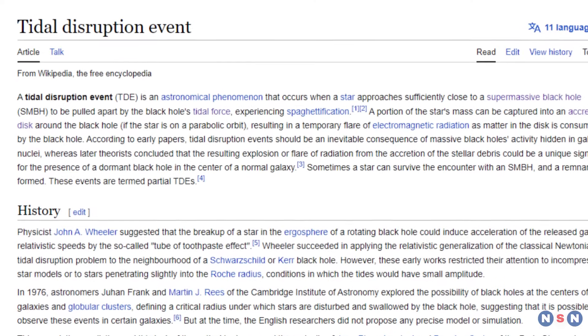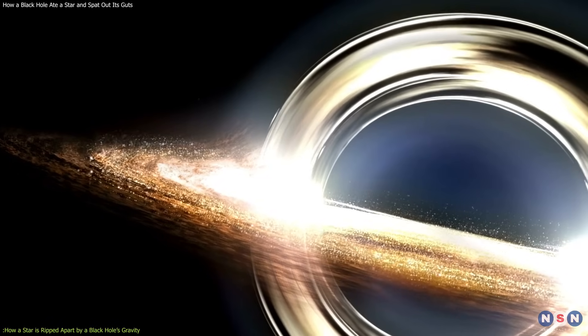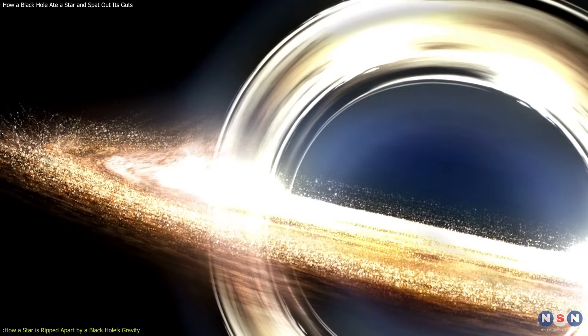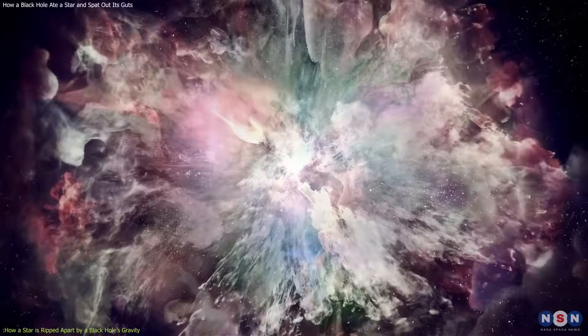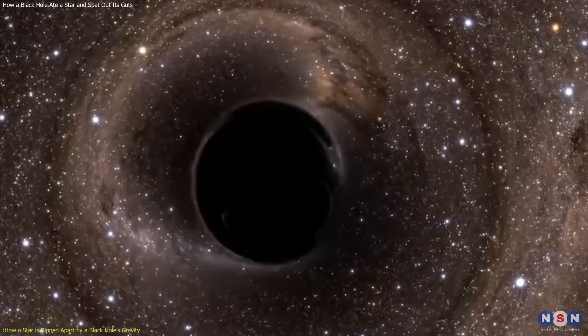Let's start by explaining what tidal disruption events are and how they happen. As you may know, black holes are regions of space where gravity is so strong that nothing can escape from them, not even light. They are usually formed by the collapse of massive stars or by the merger of smaller black holes.